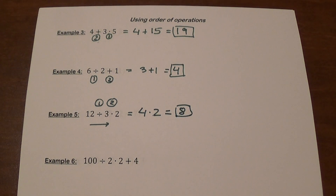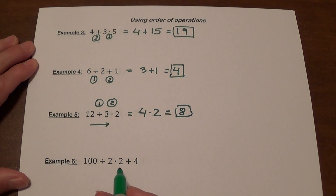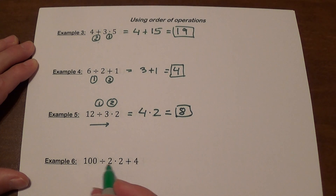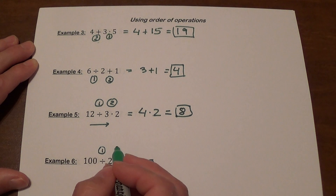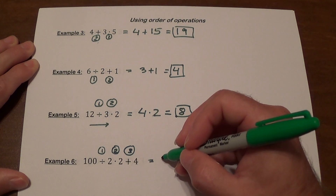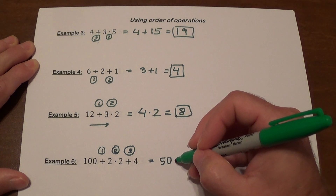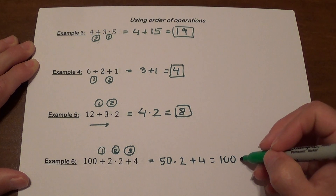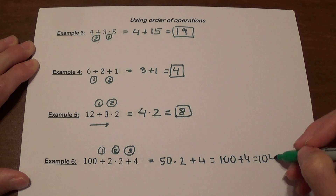Example 6: 100 divided by 2 times 2 plus 4. This is more complex. We do division first, then multiplication, then addition. 100 divided by 2 is 50, 50 times 2 gives us 100, and 100 plus 4 gives us 104.